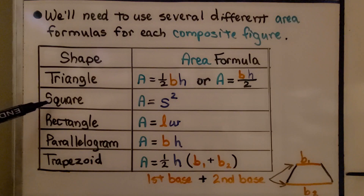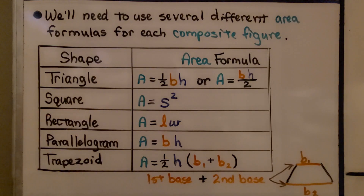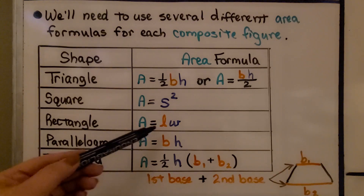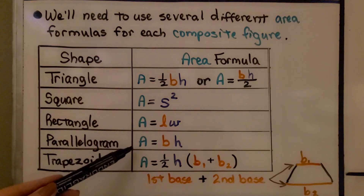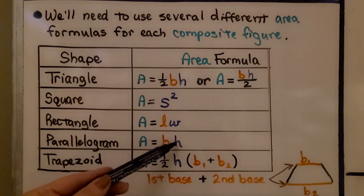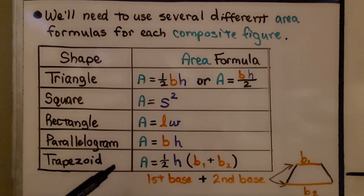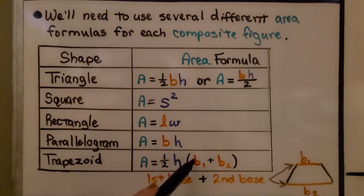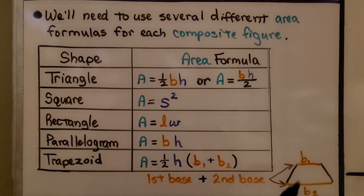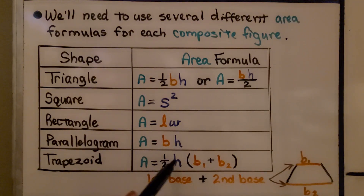Because a square has four sides that are all the same length, we just do side times side. For the rectangle, we do length times width. For a parallelogram, we do base times height. And for a trapezoid, we do half the height multiplied by the sum of base 1 plus base 2 — that's the first base added to the second base, then multiplied by half the height.